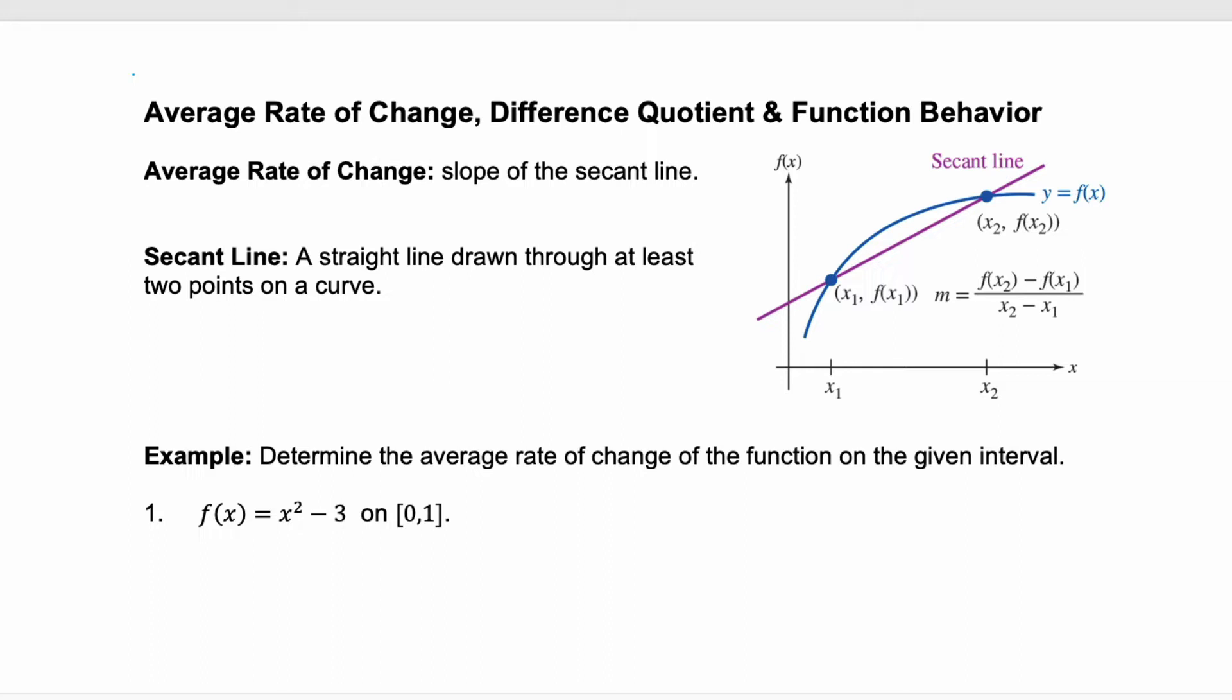Average rate of change is the slope of a line. Here we're talking about the slope of a secant line. And if you look at this graph, the secant line is a straight line that's drawn through at least two points on a curve. And in this graph, we see the equation for the slope of that secant line. So this will give us the average rate of change.